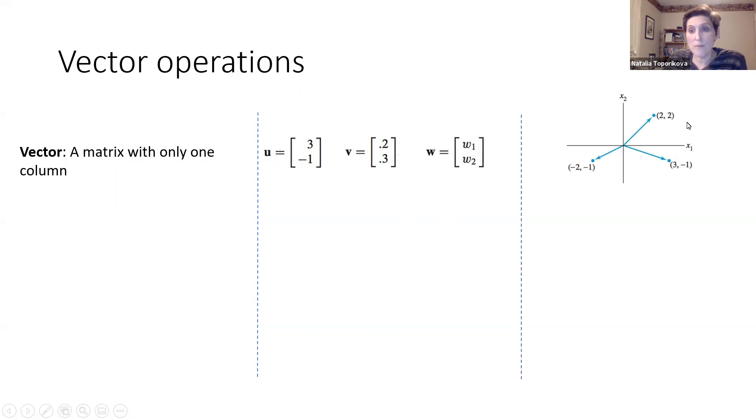And geometrically, we can look at vectors as a pointed line which connects the origin and a given point. For example, our vector [3, -1] will connect the origin with the point (3, -1).